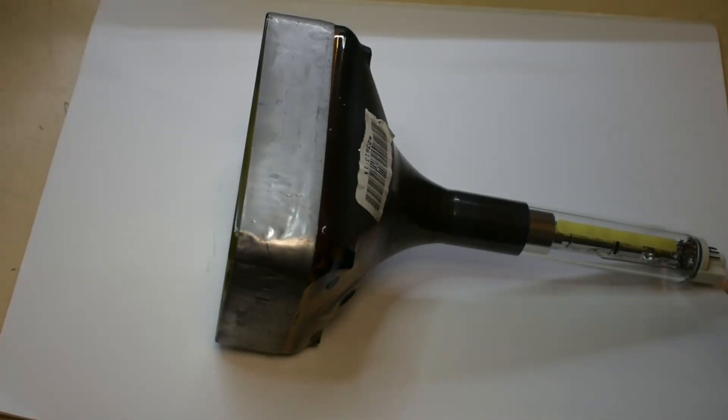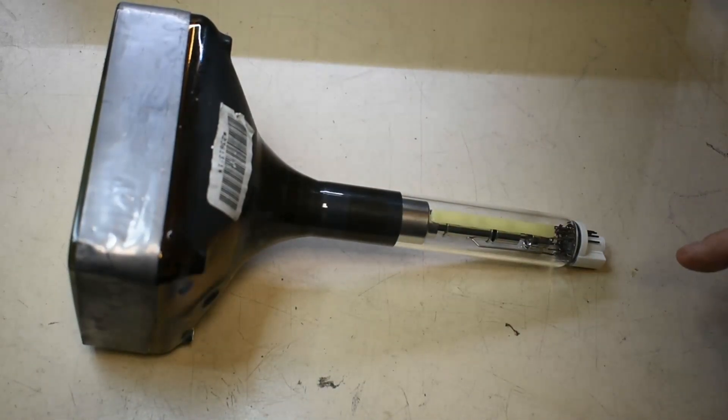Hi, a little experiment today. This is an old cathode ray tube from a projector set which uses three color CRTs. Let's take a little look at this for a number of reasons.